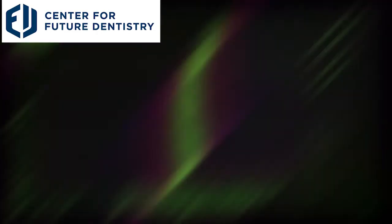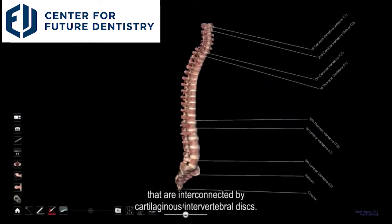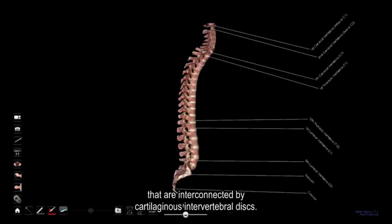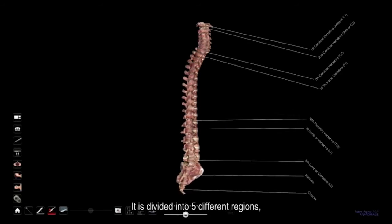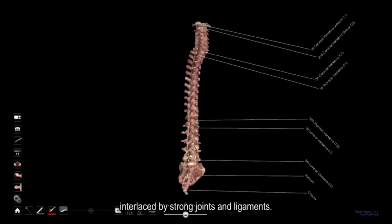The vertebral column is a curved structure composed of bony vertebrae that are interconnected by cartilaginous intervertebral discs. It is divided into five different regions, with each region characterized by a different vertebral structure interlaced by strong joints and ligaments.